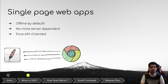Single page applications solve many problems. They make a website look like a real application which can operate offline. The only thing the backend has to implement is API endpoints that respond with JSON.